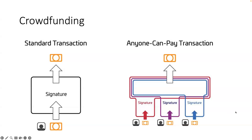Charlie adds a third input of 10 bitcoin. Together the total is 100 bitcoin — the crowdfunding target is reached. Because this is ANYONE_CAN_PAY, you can add as many inputs as you want. As long as the total amount is greater than or equal to 100, the transaction is valid and the last contributor can broadcast it. If the total amount is less, the transaction is invalid — the original UTXOs cannot be spent, so it effectively acts as a refund.